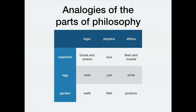Stoicism is so unified that, though they recognize the traditional tripartite division of philosophy into logic, physics, and ethics, they develop analogies to show how these parts are interactive, interdependent, and cohesive. They compare philosophy to an organism whose bones and sinews are logic, whose soul is physics, and whose flesh and muscle is ethics. The idea is that there's an organic unity — the organism can't exist or subsist without all of the parts interacting well together.